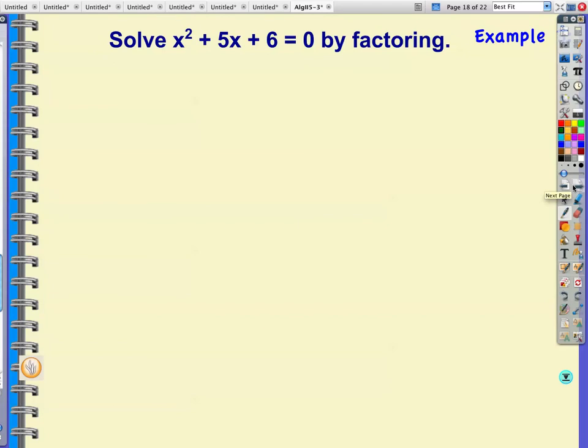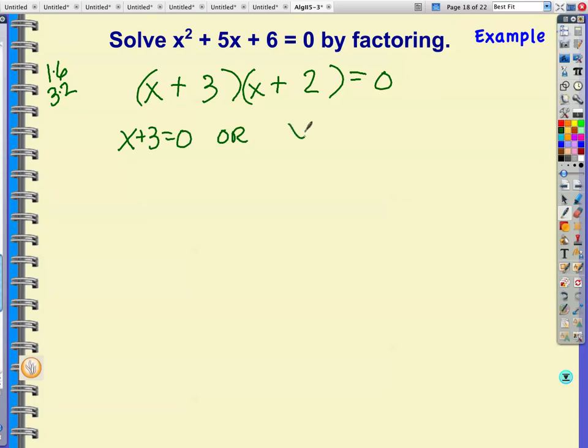x squared plus 5x plus 6 equals zero. Is there a common factor? No. Put down two sets of parentheses. What times what gives you x squared? x and x. What times what gives you 6? 1 and 6, or 3 and 2. My rule is go with the numbers close together so I've got 3 and 2. We got plus and plus because everything up here is positive. x plus 3 equals zero or x plus 2 equals zero. If that's the case x equals negative 3. If this is the case x equals negative 2.